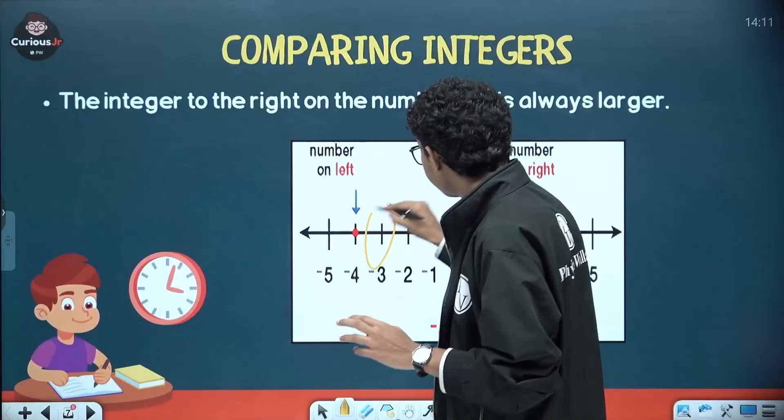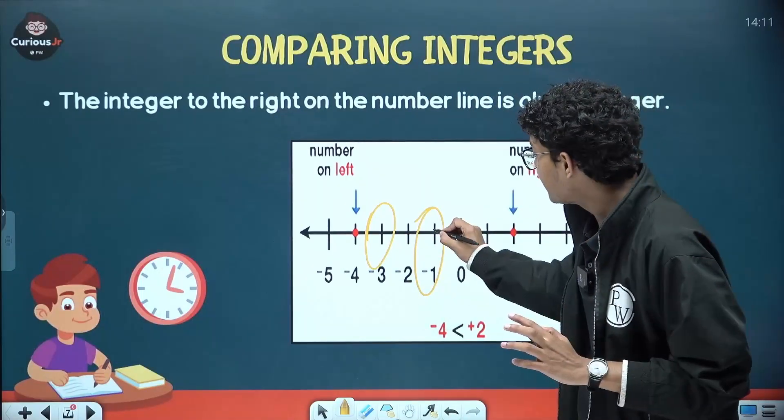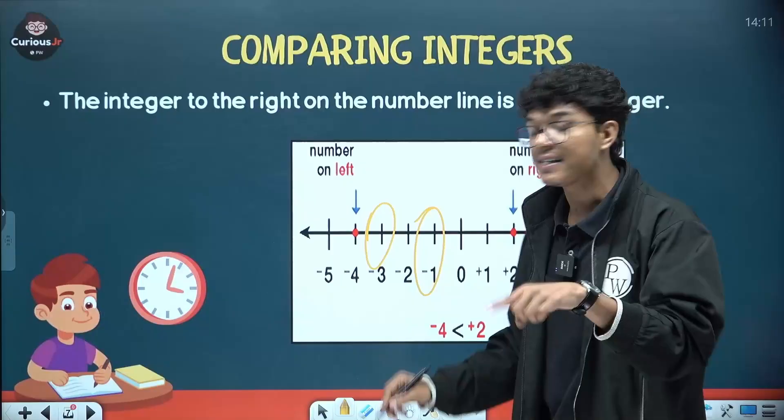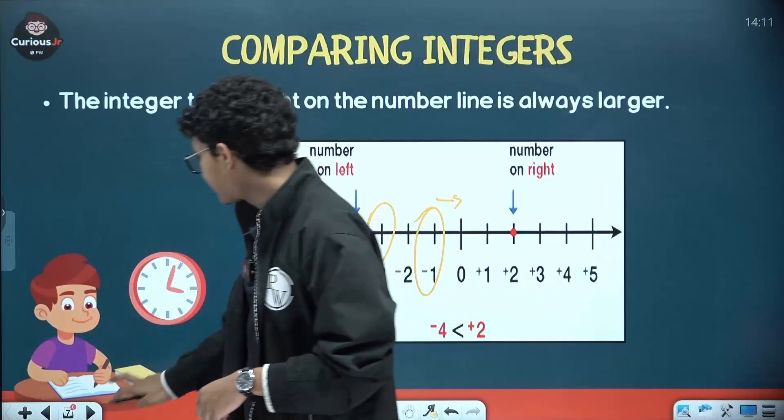If a number is closer to 0 in a number line then that number is always greater. Like agar mujhe minus 3 and minus 1 compare karna ho ga na then I would say minus 1 is greater than minus 3. Why? Because minus 1 is closer to 0. Chalo abhi isko practice karte hai.